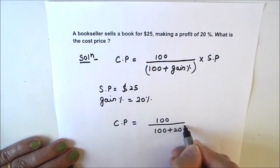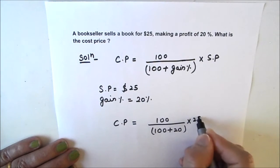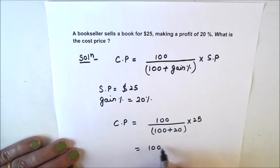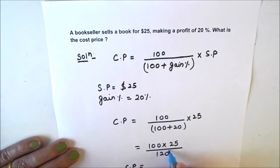So our numerator is 100 times 25 and the denominator is 120, because 100 plus 20 is 120. Now let's solve this. One zero gets eliminated with a zero in the numerator. We have 2 times 6 as 12 and 2 times 5 as 10.